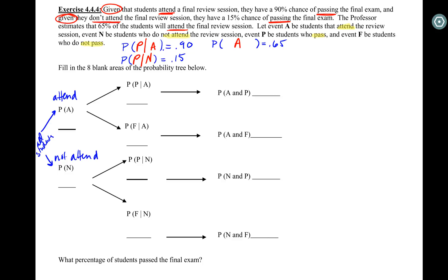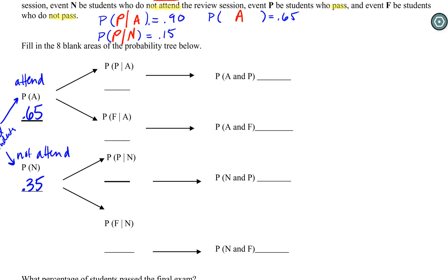And that's where we start with this first probability, so you start with that one marginal probability. So 65% of students attend the final review session, that means 35% of students are not attending.